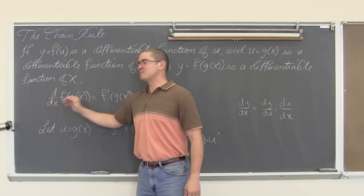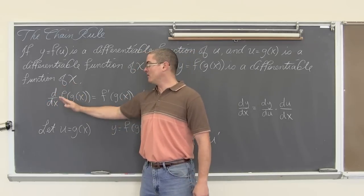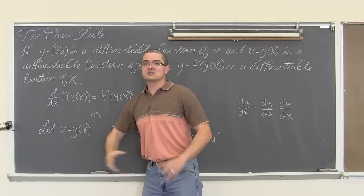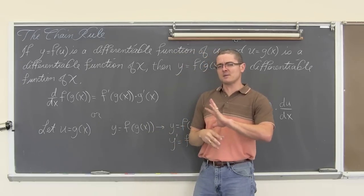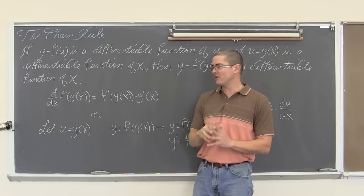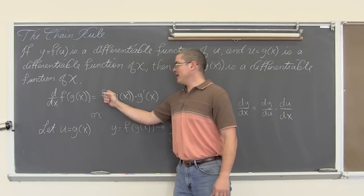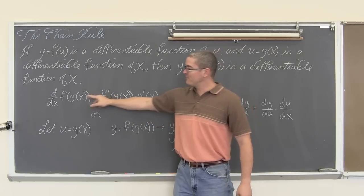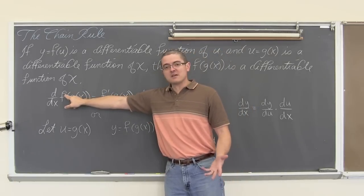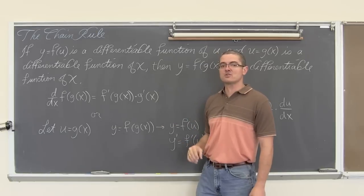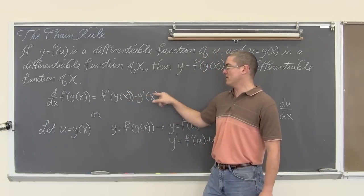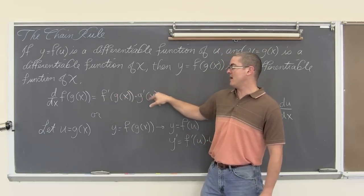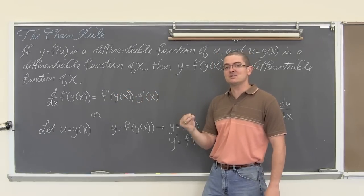So the derivative with respect to x of f of g of x — going back to our old concepts of composite functions — is equal to f prime of g of x. We found the derivative of the outside function, left the inside function alone, and then multiplied by the derivative of g of x, where we actually take that inside function out and find its derivative.